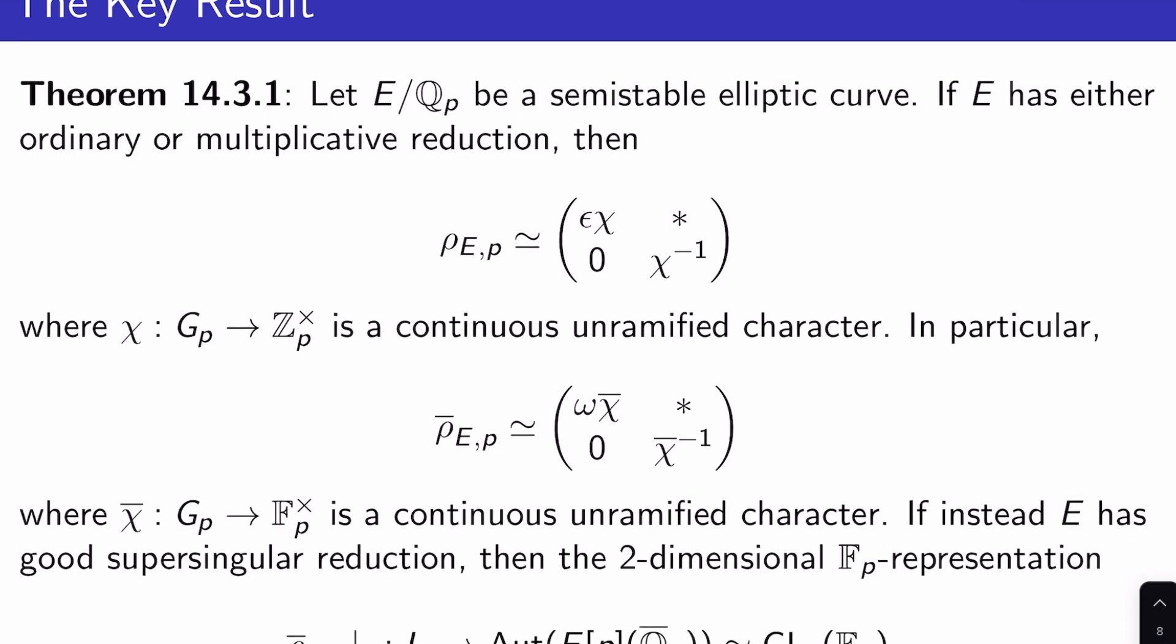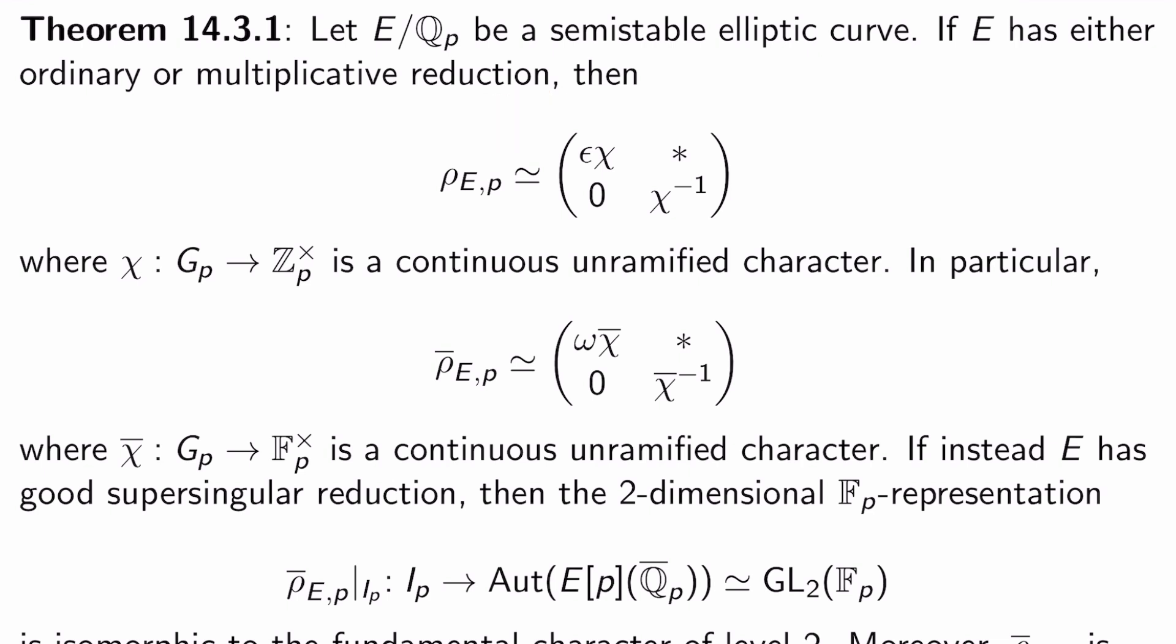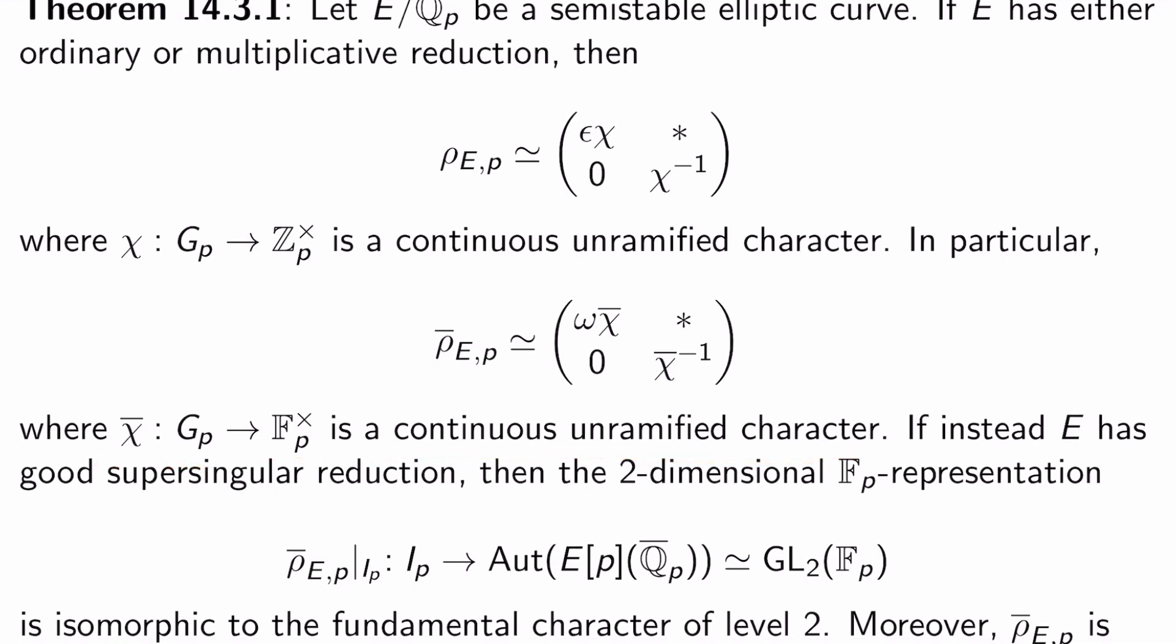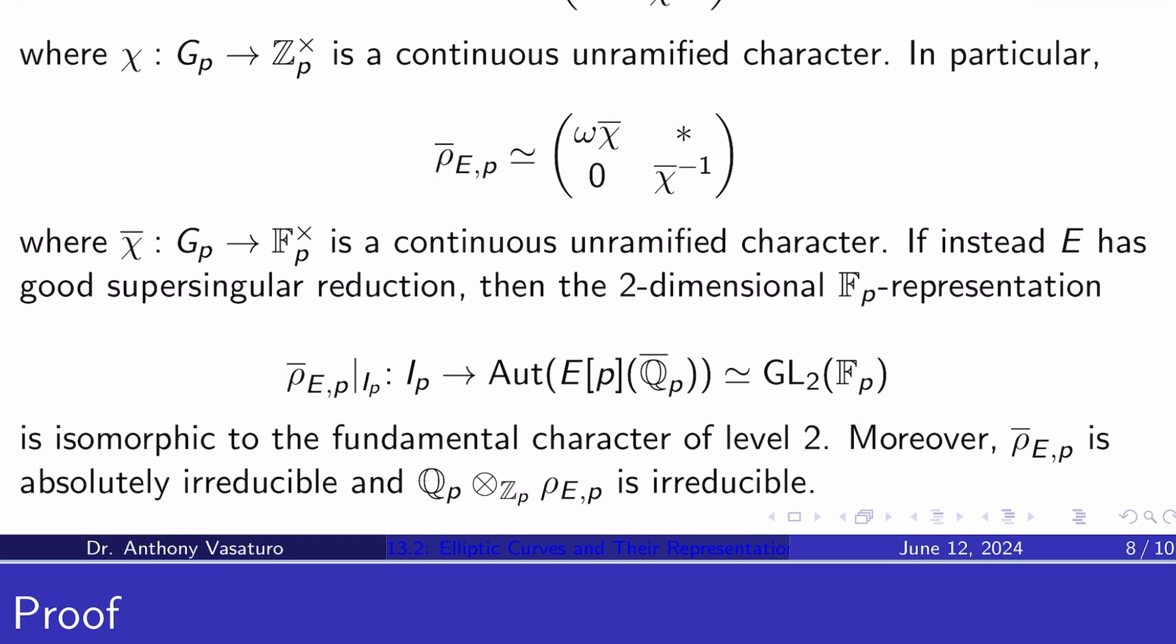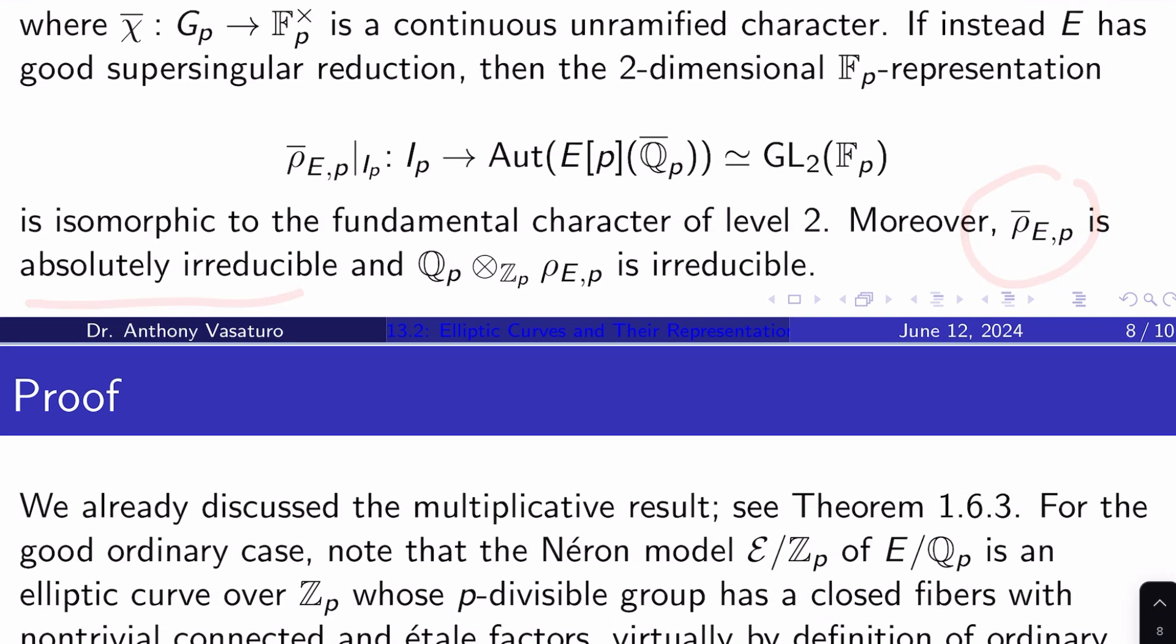The key result of this video is theorem 14.3.1, and it says the following. Let E over Q_p be a semi-stable elliptic curve. If E has either ordinary or multiplicative reduction, then rho_{E,p} is isomorphic to epsilon(chi, *, 0, chi^{-1}), where chi from G_p to Z_p^× is a continuous unramified character. In other words, when you restrict down to the inertia group, you just get like cyclotomic action, trivial action, something 0. In particular, rho bar_{E,p} is isomorphic to omega(chi bar, *, 0, chi bar^{-1}), where chi bar from G_p to F_p^× is a continuous unramified character. The only other option is that E has good supersingular reduction. In this case, the two-dimensional F_p representation, rho bar_{E,p} restricted to inertia, is isomorphic to the fundamental character of level 2. Moreover, rho bar_{E,p} is absolutely irreducible, so we don't get this nice representation theory up here. And when you tensor rho_{E,p} up to Q_p, you get something irreducible. So we're going to prove this.